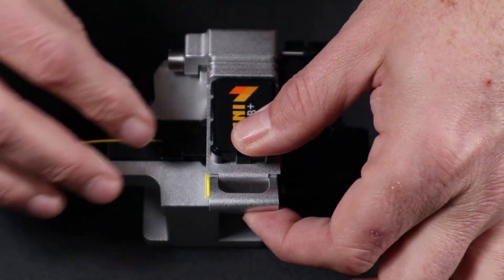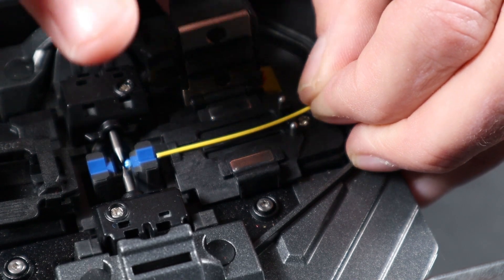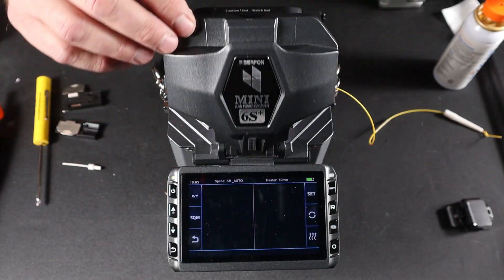Once your fiber is stripped, cleaned, and cleaved, open your holder, close your door. Next, close your wind cover.